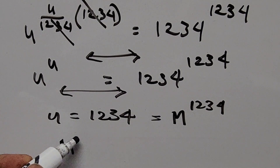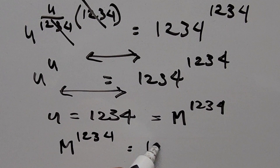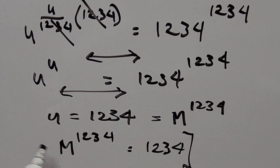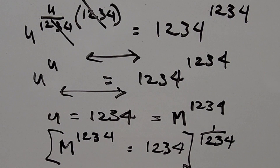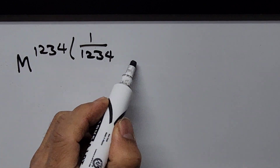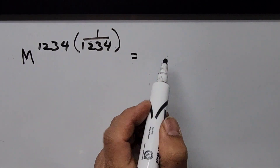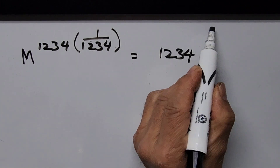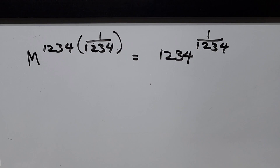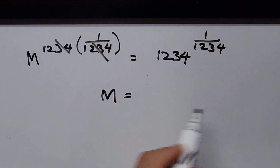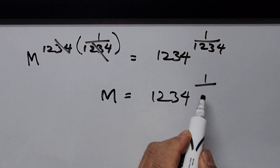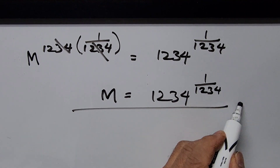Raising both sides to the power of 1/1234: the left-hand side exponent 1234 × (1/1234) cancels, giving m. The right-hand side becomes 1234^(1/1234). So our final answer is m = 1234^(1/1234).